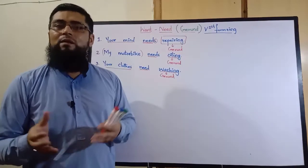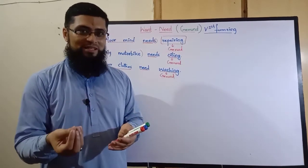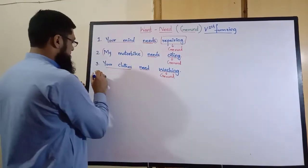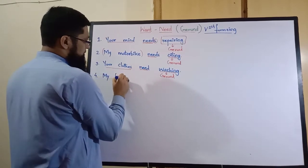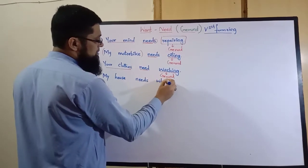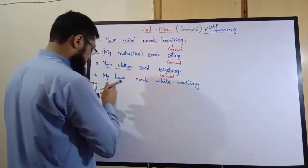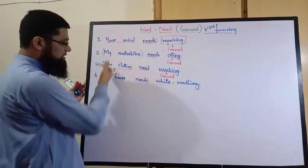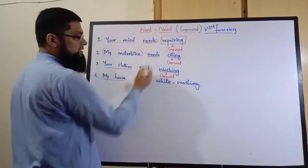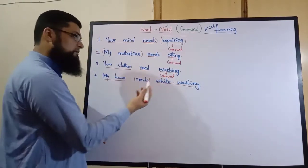اگلی مثال: 'میرے گھر میں سفیدی ہونے والی ہو گئی ہے' یعنی سفیدی ہونے کی ضرورت ہے۔ اس کا انگریزی ترجمہ ہے: 'My house needs white washing.' Subject 'my house' singular تھا اس لیے needs استعمال کیا۔ آخر میں gerund — 'white wash' کی gerund بنتی ہے 'white washing'۔